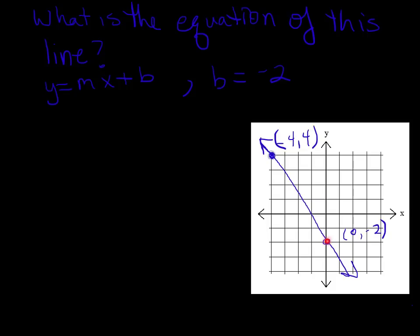Well, so I've got 1, 2, 3, 4, 5, 6, that's my rise, and then my run is 1, 2, 3, 4. So my rise was 6, and my run was 4.